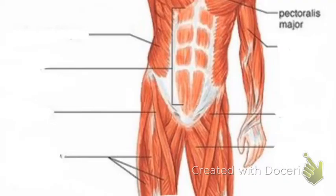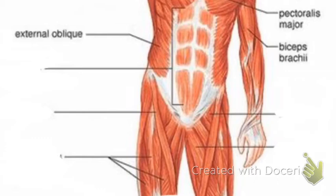Pectoralis major is your pec muscle; it is what allows you to do sort of an inward motion of your arm. If it is extended out in front of you, it's what pulls it in a little tighter. Biceps brachii are a flexor for your arm — it's what brings your forearm up to your upper arm, so the radius and ulna get pulled closer to the humerus.